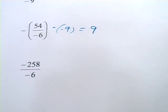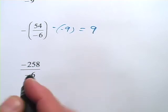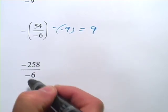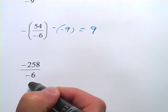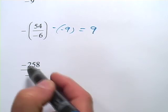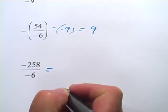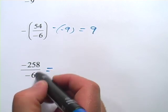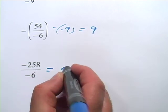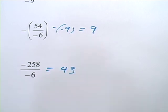In this next one, we have negative 258 divided by negative 6. The number of negative signs is 2. A negative divided by a negative is going to be positive. Even number of negative signs, answer's positive. You might want to plug this into your calculator. What you'll find out is that 258 divided by 6 is 43, and the answer will be positive.